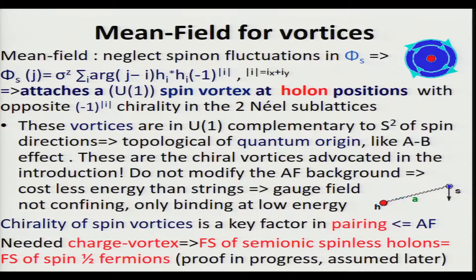These vortices are in the U(1) which is complementary to the SU(2) spin direction. This is not a spin vortex in the sense that the spin direction moves in a vortex-like fashion; it's like the Aharonov-Bohm effect — it's inside this U(1) which is left unbroken by the antiferromagnetic transition. So these vortices are of purely quantum origin, exactly like the Aharonov-Bohm effect. And these are exactly the chiral vortices advocated in the introduction. They do not modify the antiferromagnetic background, so they cost much less than the string. The effect is that the slave-particle gauge field is not anymore confining but only binding at low energy, binding together the spin and the holon.